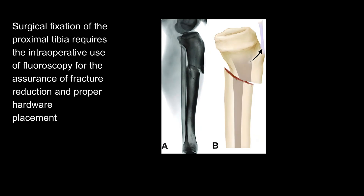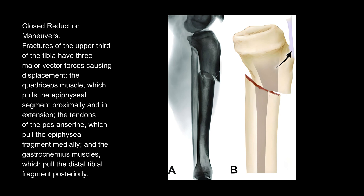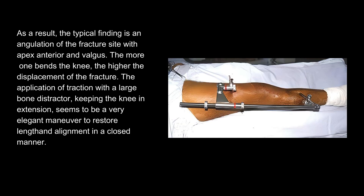Surgical fixation of the proximal tibia requires the intraoperative use of fluoroscopy for assurance of fracture reduction and proper hardware placement. Fractures of the upper third of the tibia have three major vector forces causing displacement: the quadriceps muscle, which pulls the epiphyseal segment proximally and in extension; the tendons of the pes anserine, which pull the epiphyseal fragment medially; and the gastrocnemius muscles, which pull the distal tibial fragment posteriorly. As a result, the typical finding is an angulation of the fracture site with apex anterior and valgus.